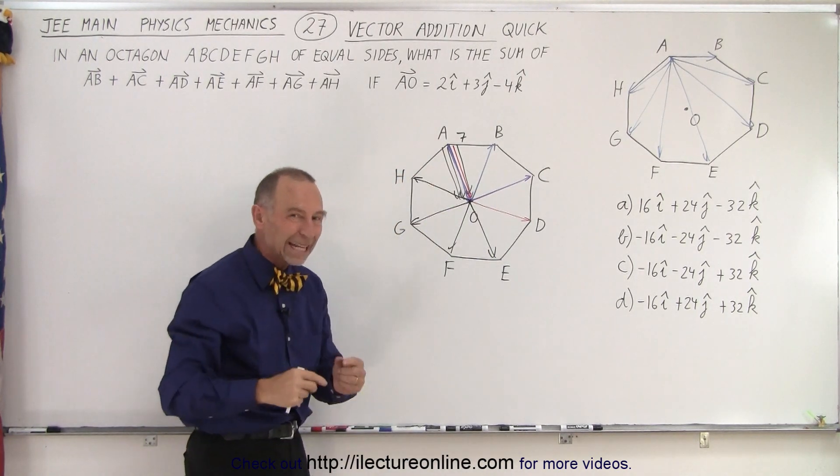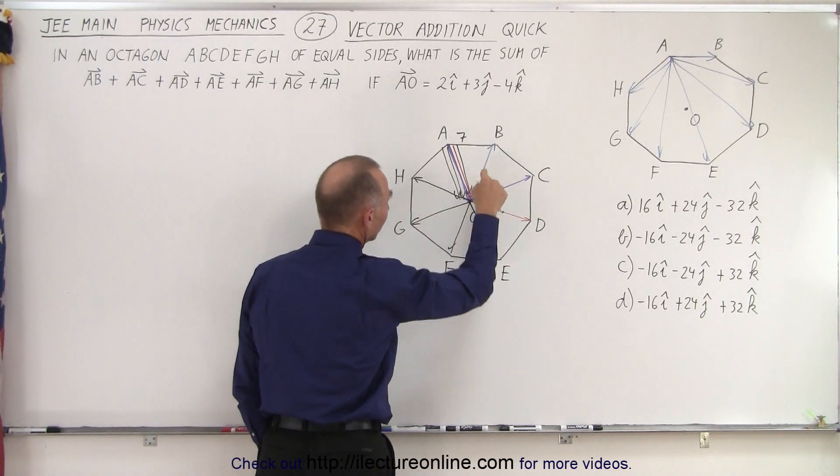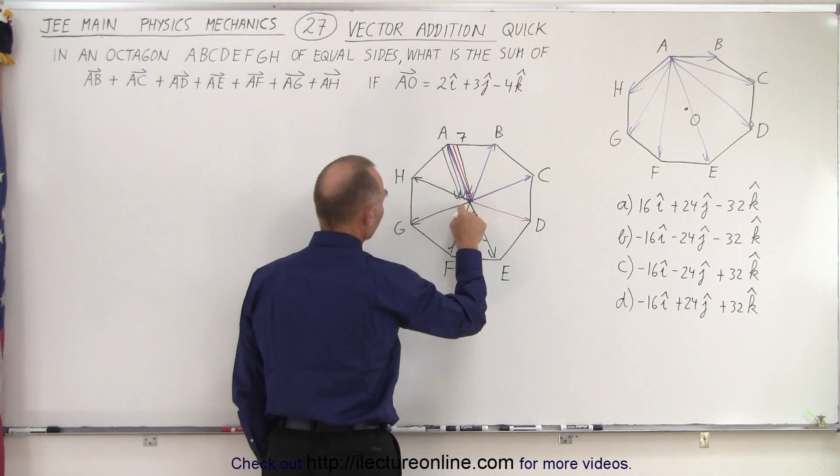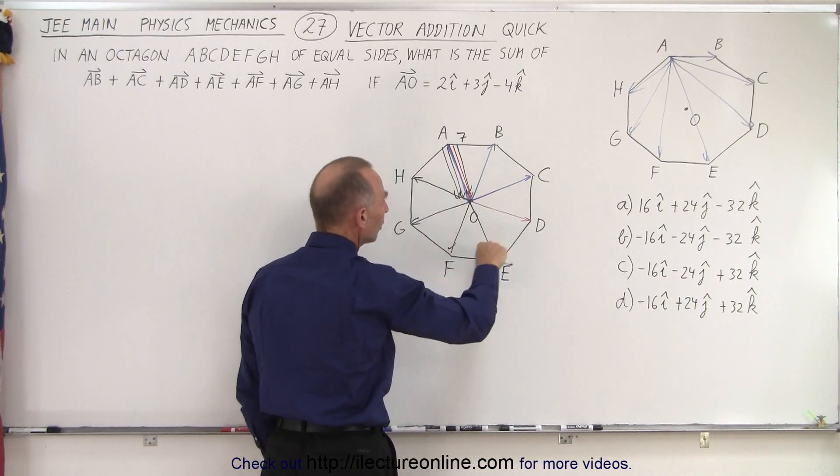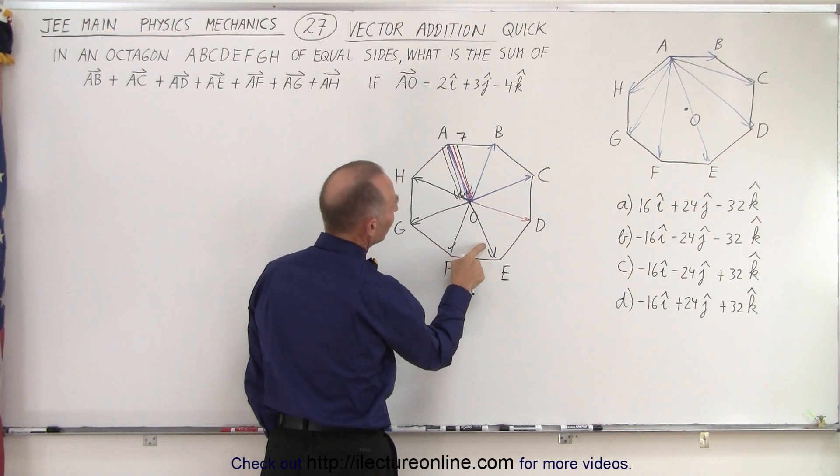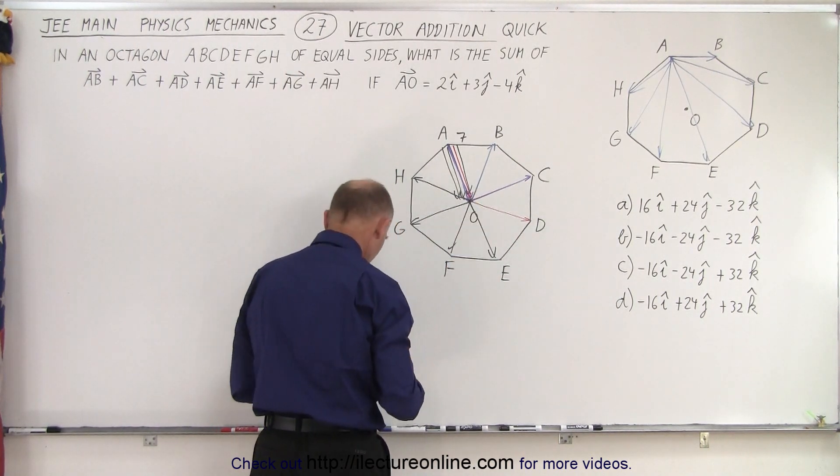Now notice that any opposing vectors cancel out. O to B cancels out from O to F, and O to C cancels out from O to G and so forth. So all these vectors cancel out except this vector has nothing to cancel out with. So you need one more vector in that direction.